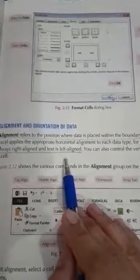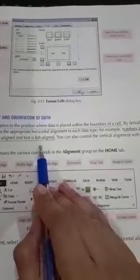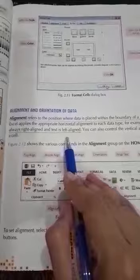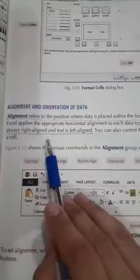When you enter data, there are two types of data: numbers and letters. The numbers will be at the right hand side and letters will be left hand side. You can also control the vertical alignment within a cell.